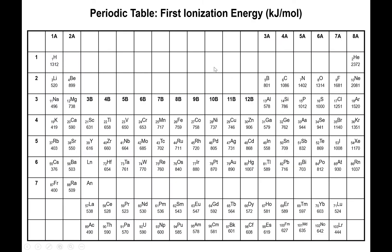Looking at the periodic table, there's a lot more to the story. We know that if we look at the trend going from top to bottom, the ionization energy tends to decrease. As you can see here, hydrogen starts at 1312 kilojoules per mole and goes down to 400 kilojoules per mole. Looking at the halogens, the same thing happens — we go from 1681 down to 930. Generally speaking, that trend from top to bottom repeats itself no matter which group you're looking at.